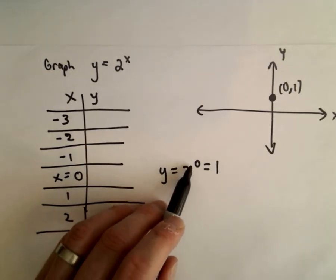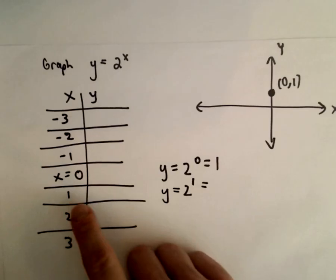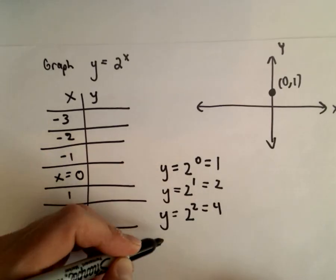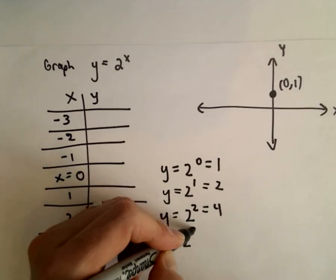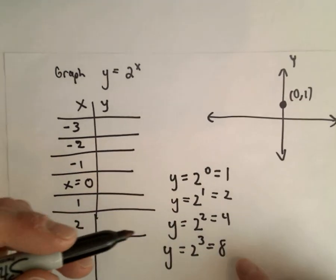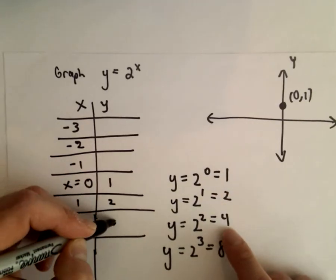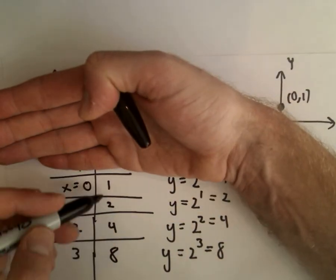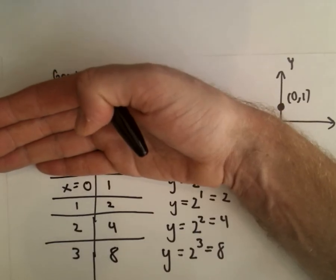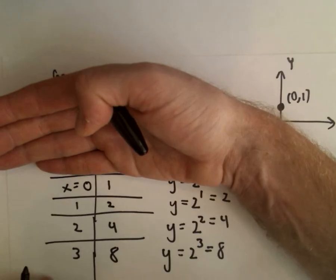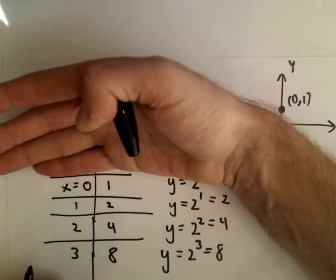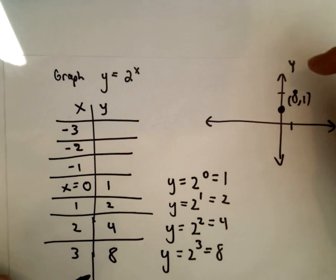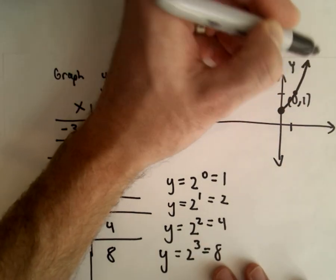At X equals 0, Y equals 2 to the 0, which is 1. At X equals 1, we get 2 to the 1st power, which is 2. At X equals 2, we get 2 squared, which is 4. At X equals 3, we get 2 to the 3rd, which is 2 times 2 times 2, giving us 8. Notice the Y values are doubling — that's what exponential functions do. At X equals 1, we're at 2; at X equals 2, we're already at 4; at X equals 3, we're at 8. The graph is getting really big really fast.